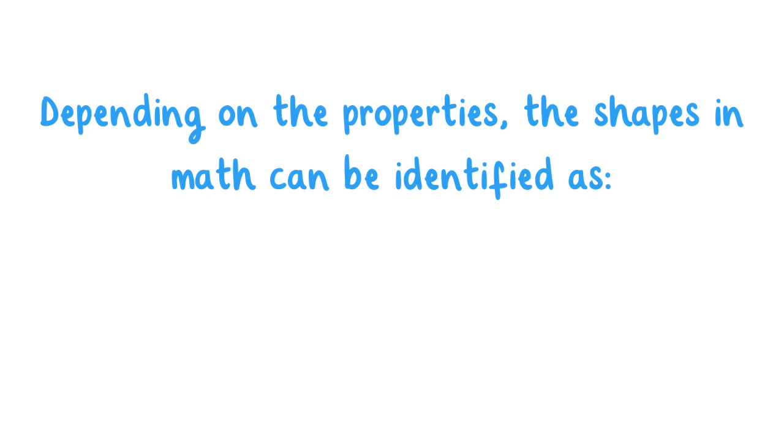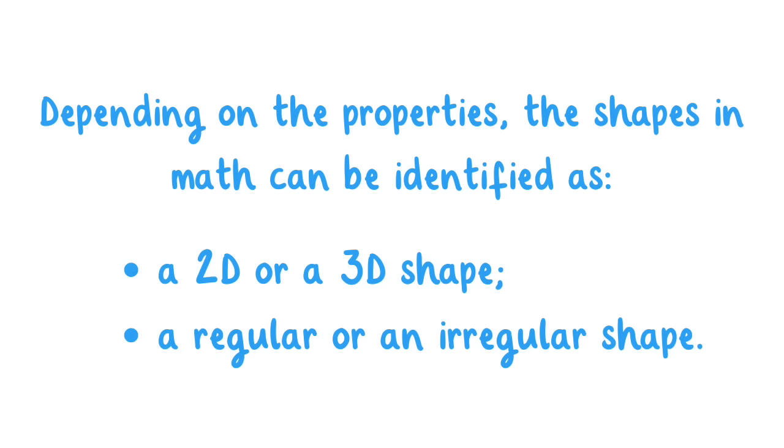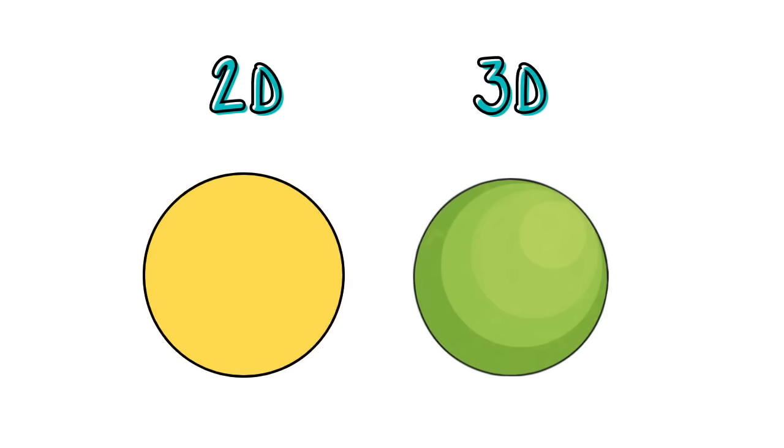Depending on the properties, the shapes in math can be defined as a 2D or 3D shape, or a regular or an irregular shape. But today, we're going to focus on recognizing 2D and 3D shapes and study their properties.